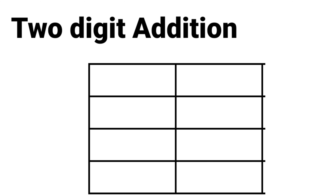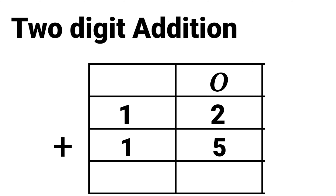12 plus 15. Again 12 plus 15. So 2 plus 5 is the ones space, and 1 plus 1 is the tens space. First we add the ones space.